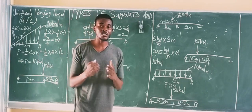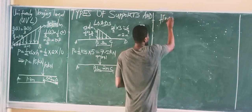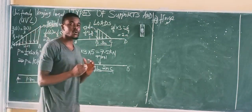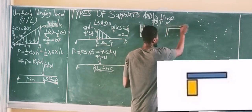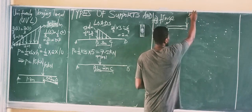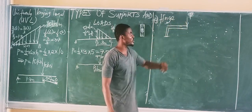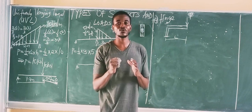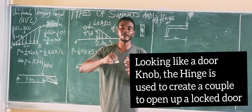The next type of load is called a Hinge. What is a hinge? A hinge is like a door handle — it is used to produce a moment or couple to allow for entrance. The hinge carries a load and looks like a handle extending from the beam.